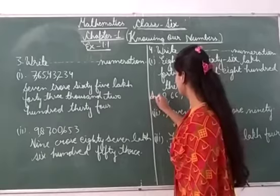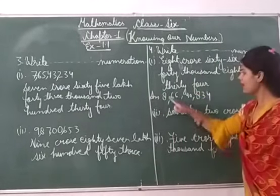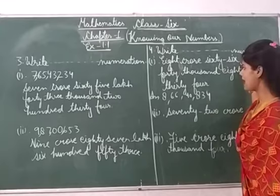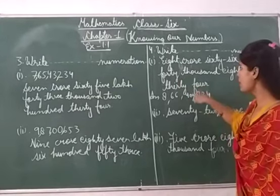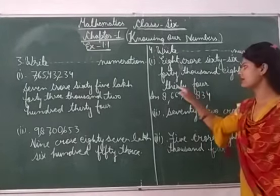I repeat again: 8 crores, 66 lakhs, and 40 thousand, 834. The next is 72 crores, 90 lakhs.